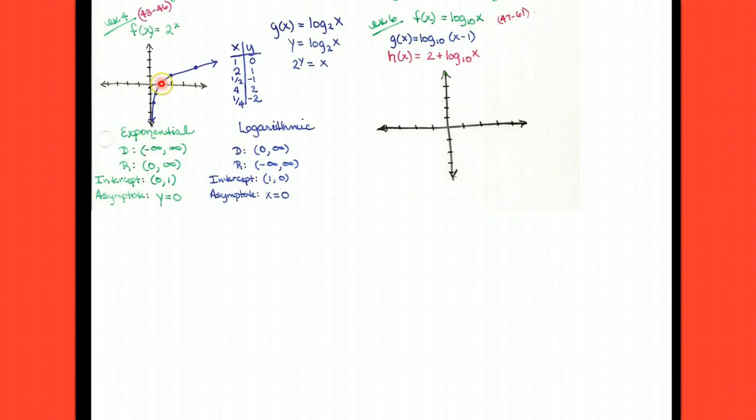We got 1, 0, 2, 1, 4, 2, 1 half negative 1, and 1 fourth negative 2. Now, I have a pretty good feel with these three points up here. You know, it's pretty crystal clear what that part of the graph is doing.